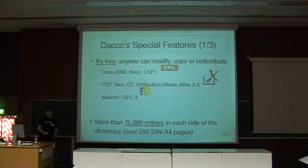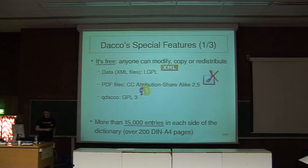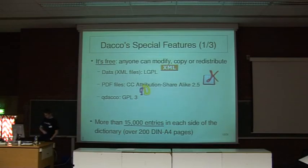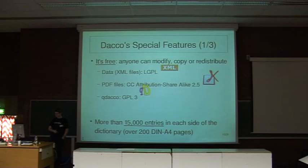Some DACO special features: it's free, but free is not a license — so specifically, the XML files are under LGPL, the PDF files are under Creative Commons Attribution Share-Alike, and the standalone application is under GPL. DACO has more than 15,000 entries. If you print the PDF files at a standard font size, you'll get about 200 pages — it's a quite big dictionary.